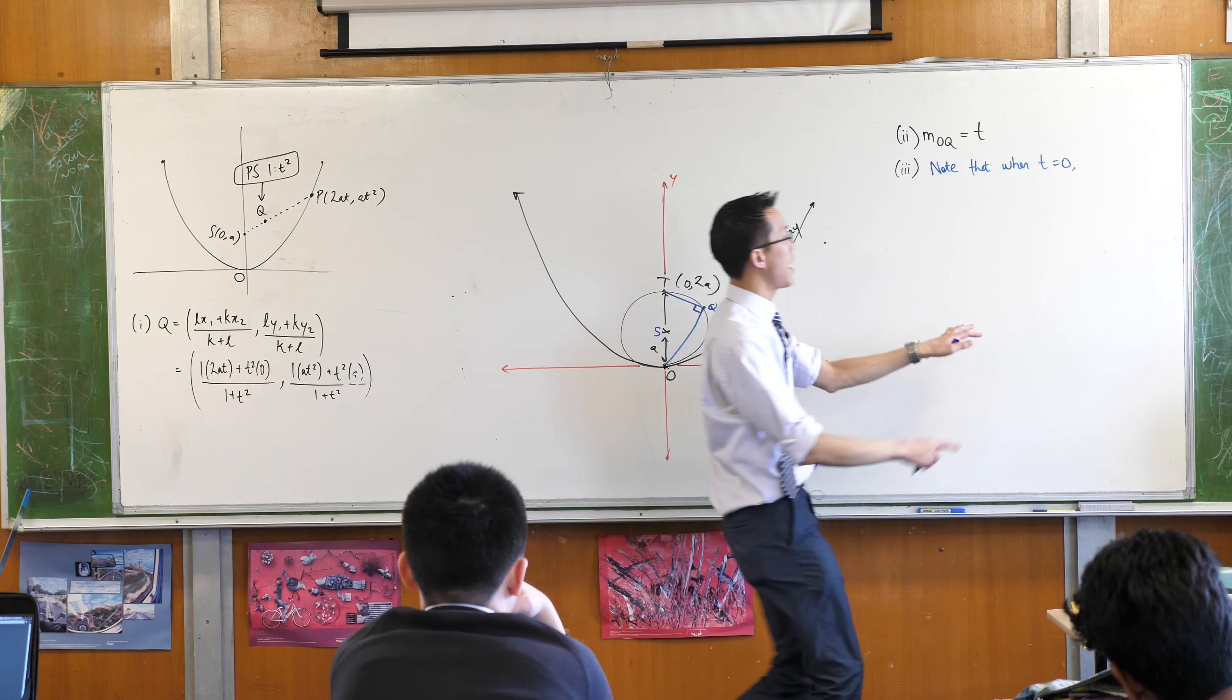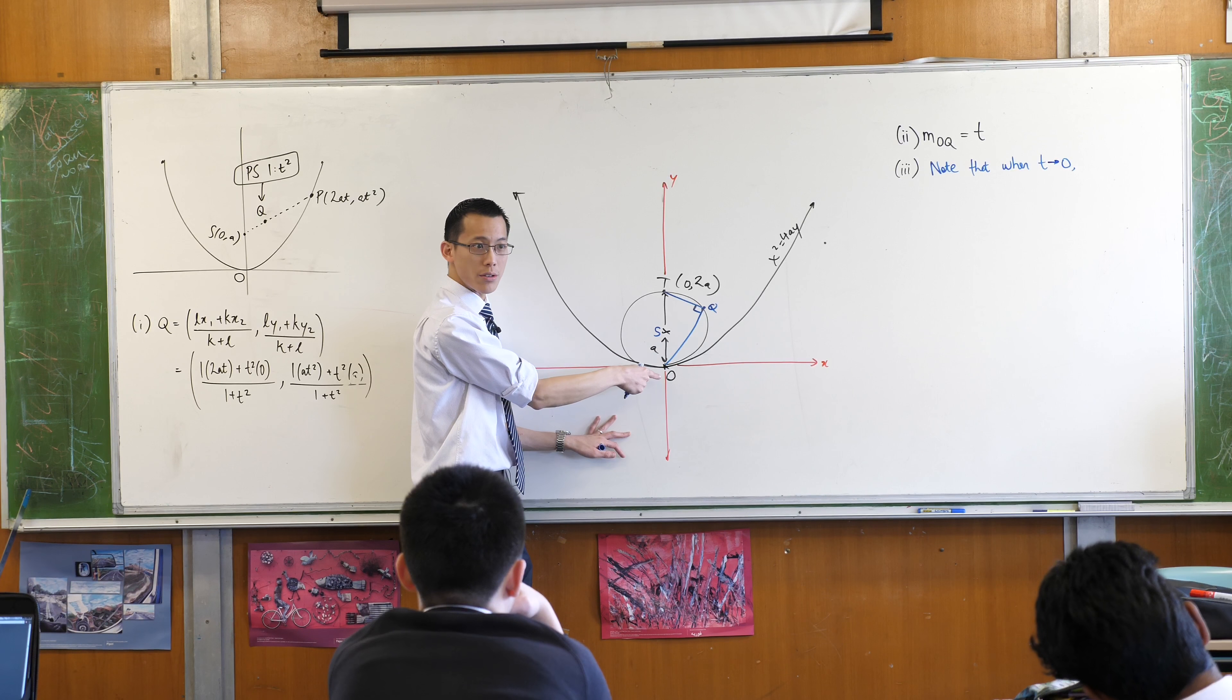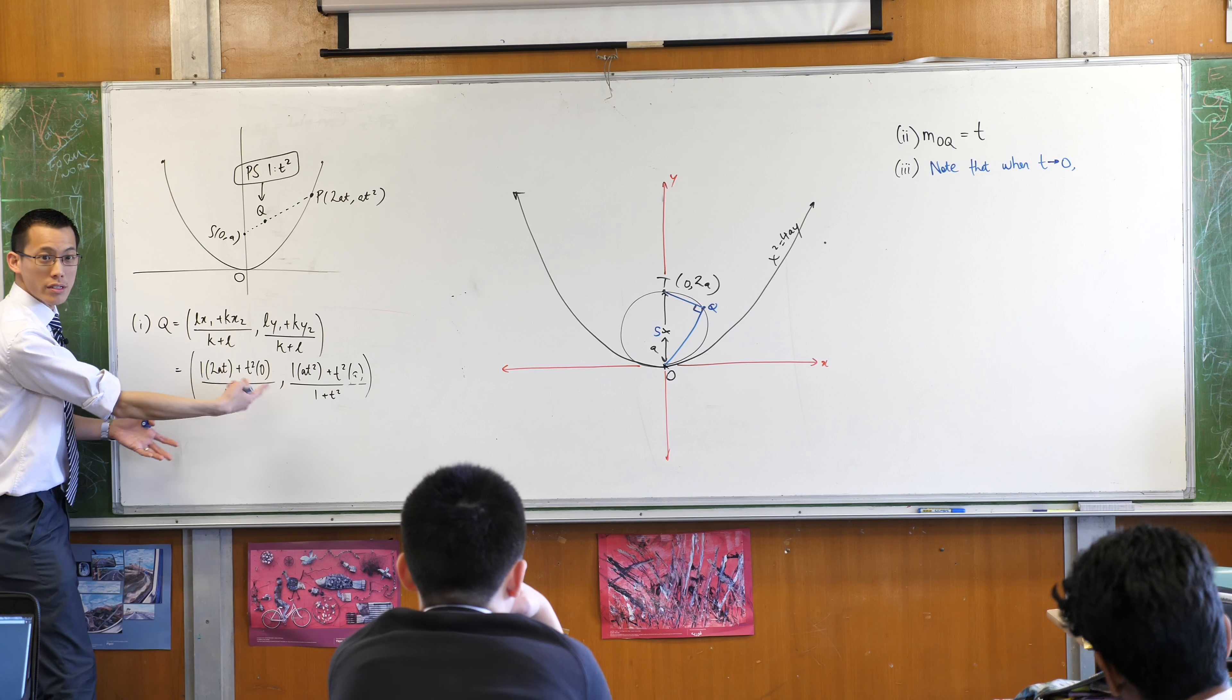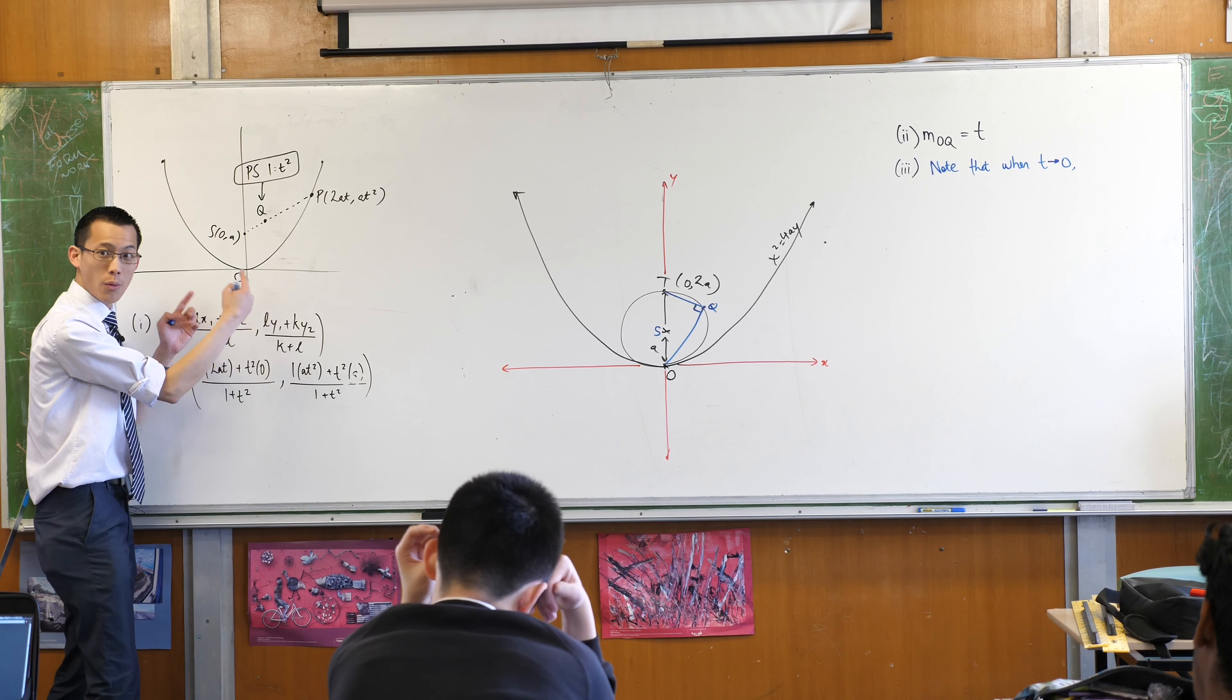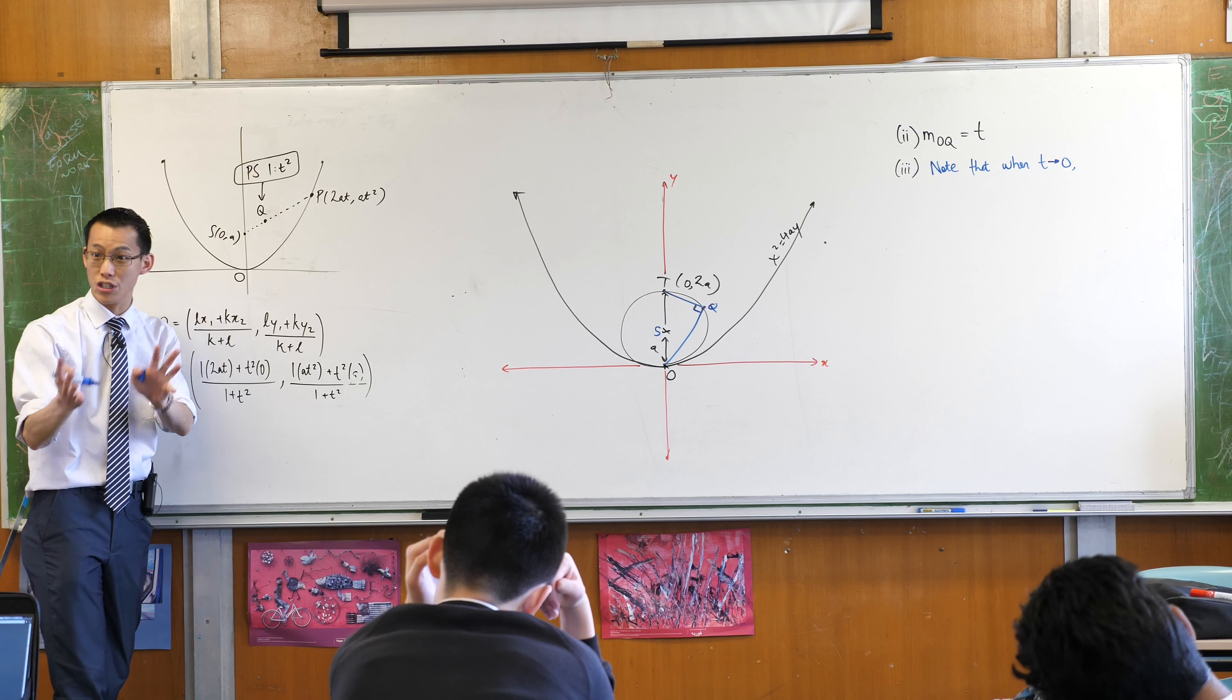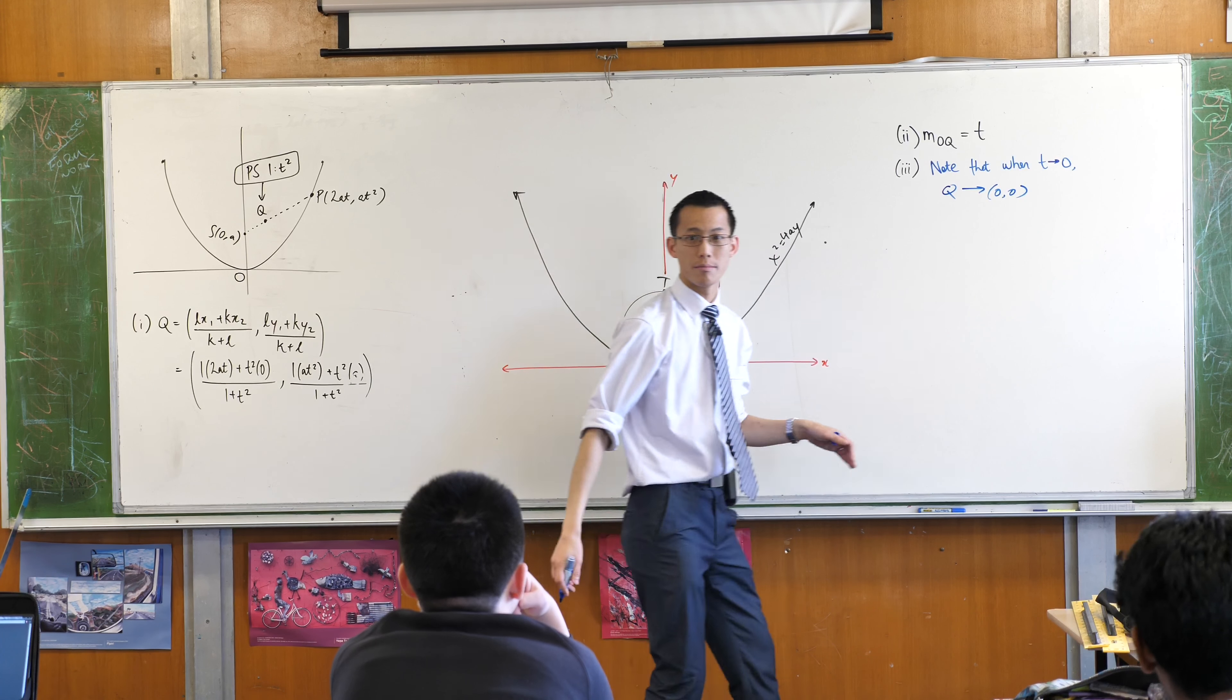So it might be better to say, when T approaches 0, right, where's it going? Well, it's going towards O. Do you remember that? Because look at the coordinates of Q. You've got 2AT and 2AT squared. There's T's in both of these. When T is going towards 0, these things are both going towards 0, right? So when T approaches 0, Q approaches the origin. Is that okay?